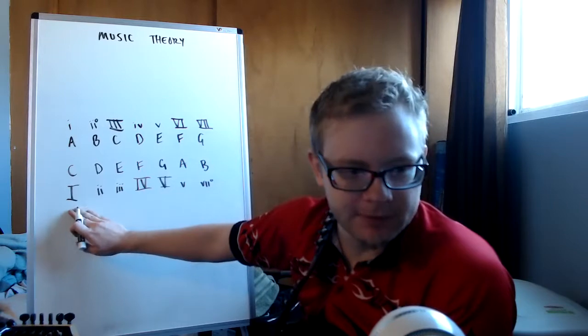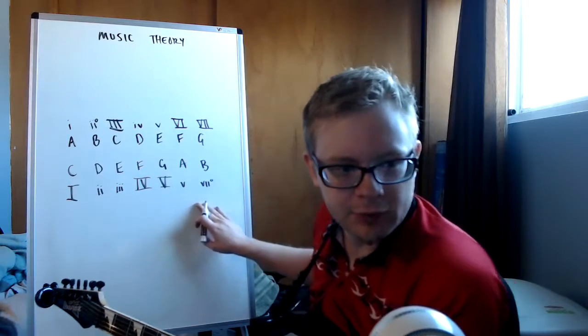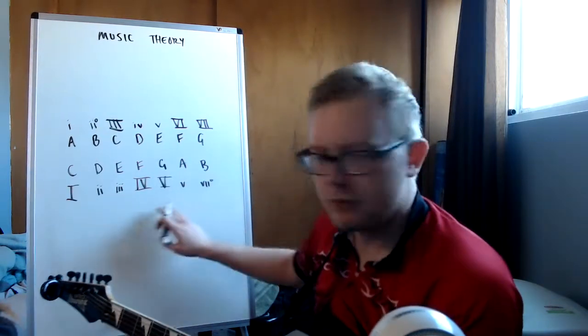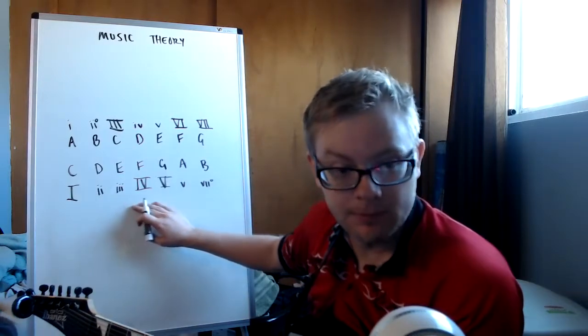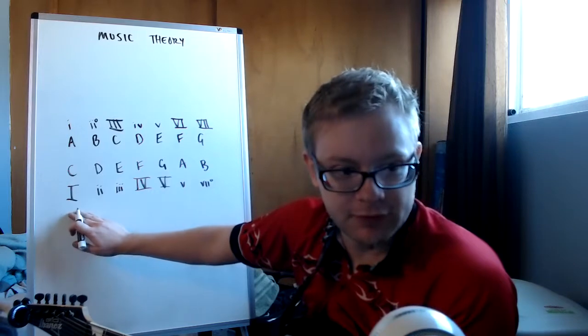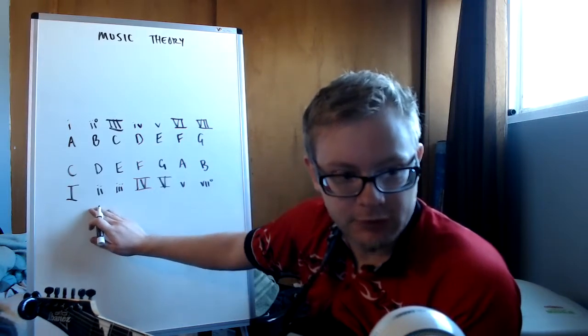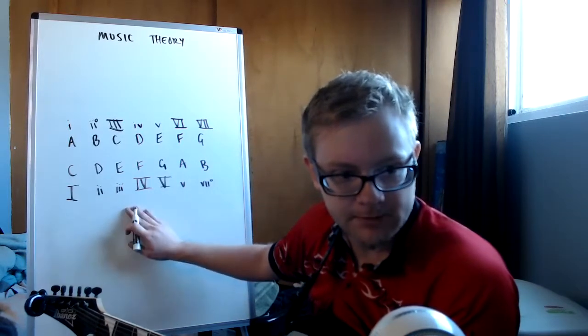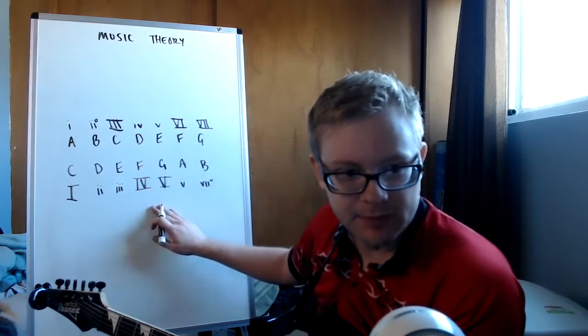But basically, here it is. We have these Roman numerals down here. And this is our formula for building the chords in the major scale. You have to remember this formula: capital I, lowercase ii, lowercase iii. And then here we go. The IV and the V are both big.